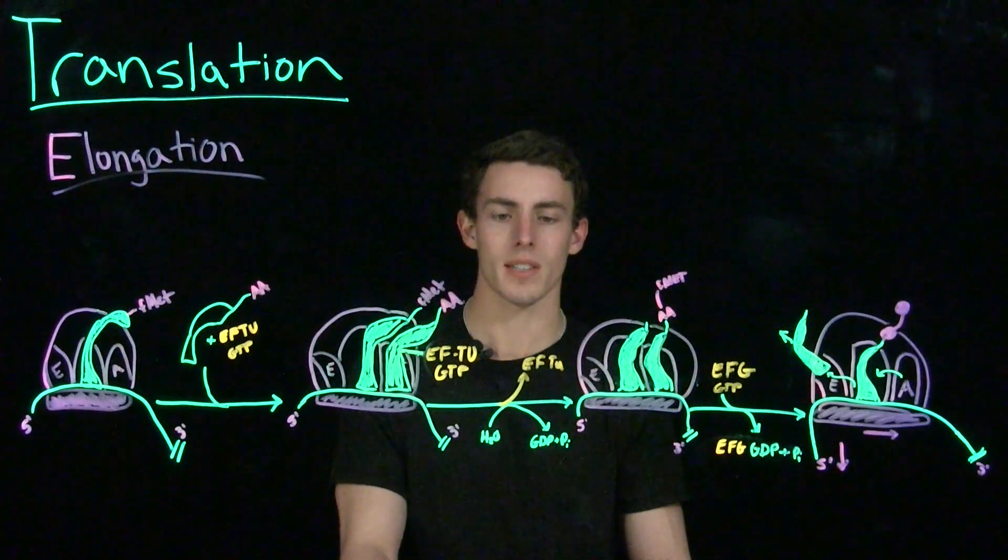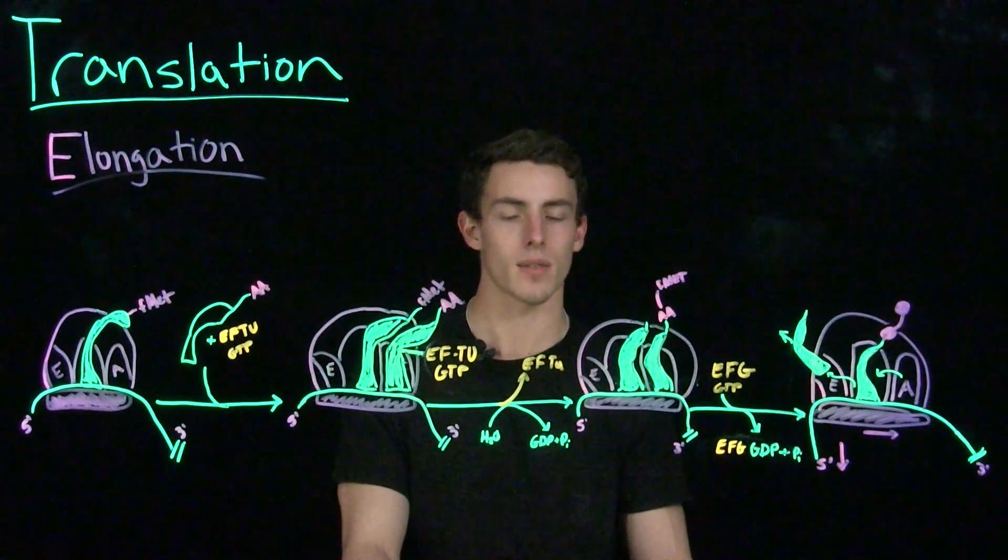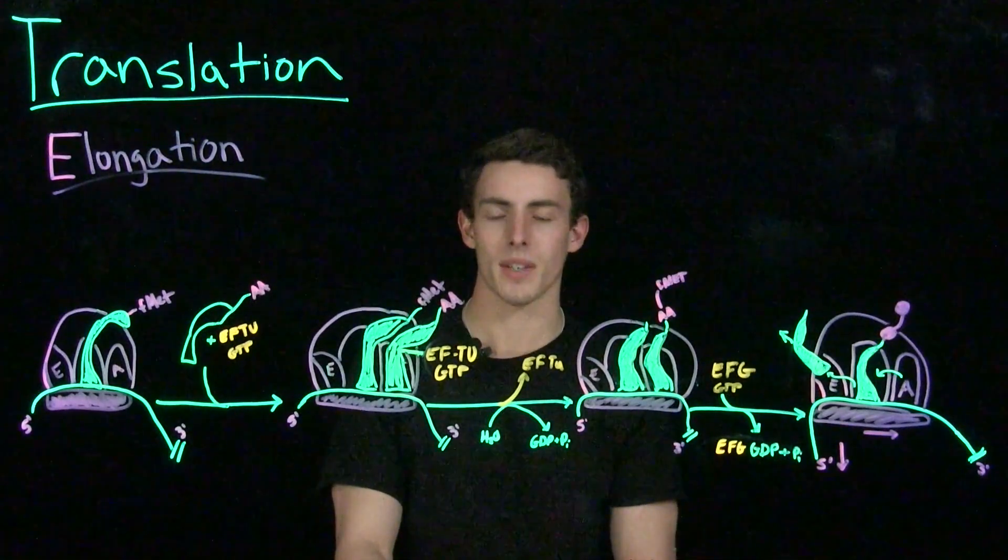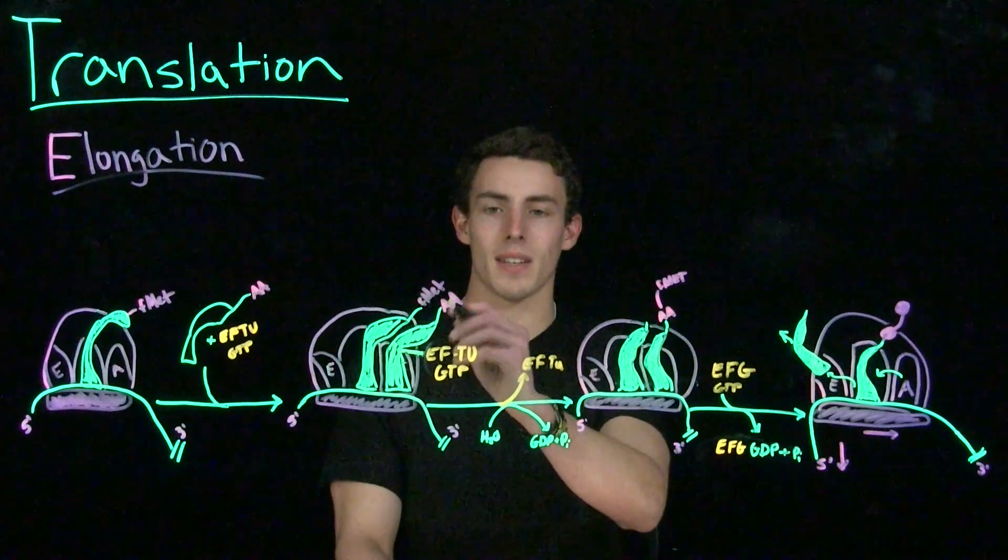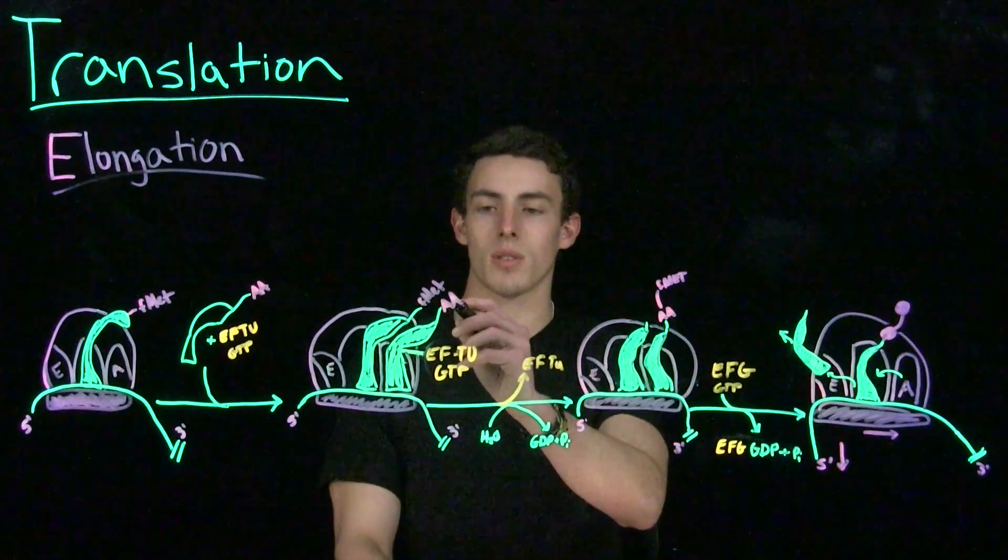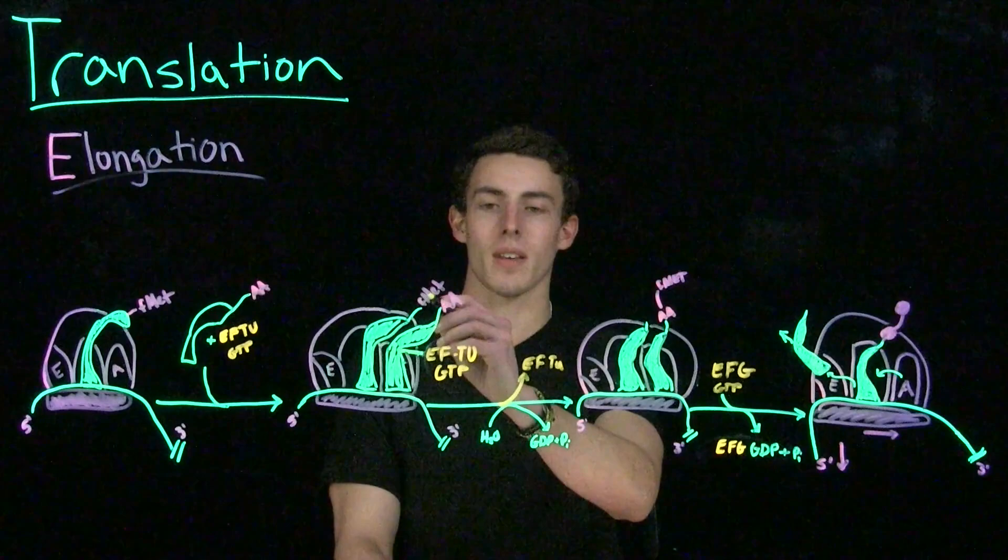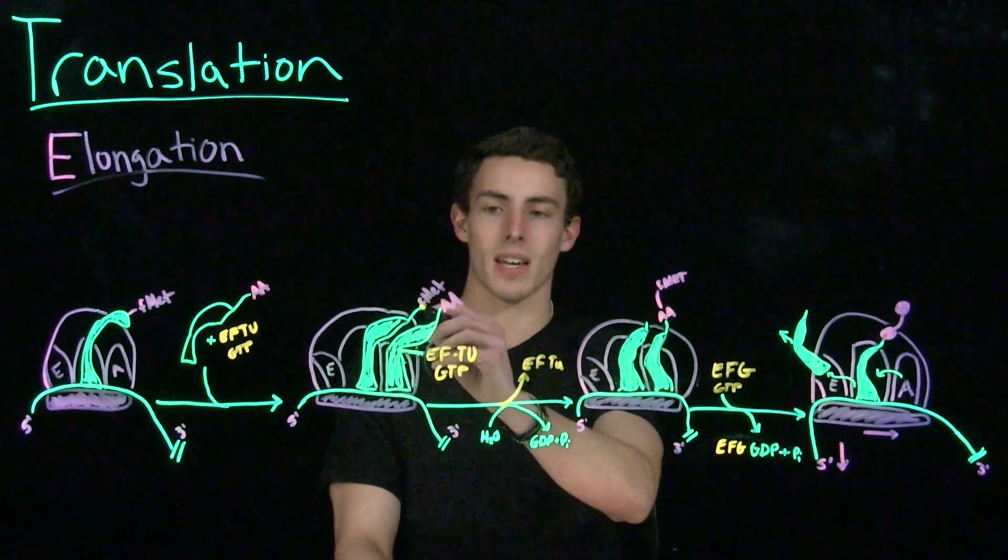The GTP hydrolysis and the EFTU leaving is going to catalyze the formation of a peptide bond. If you watched my video on peptide bond formation, you'll recall that the amino group on the amino acid in the aminoacyl site is going to attack the carbonyl carbon of the amino acid in the peptidyl site.